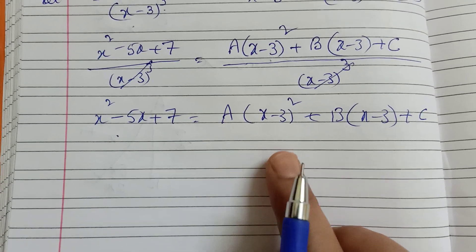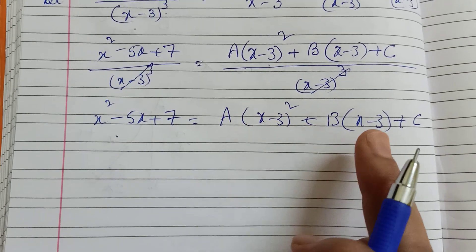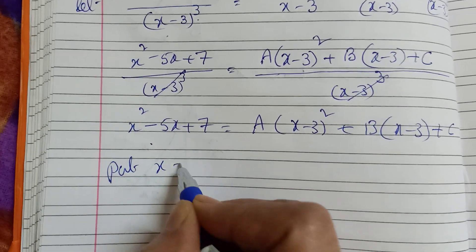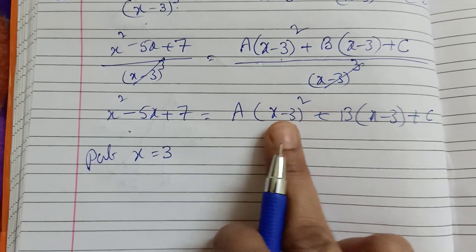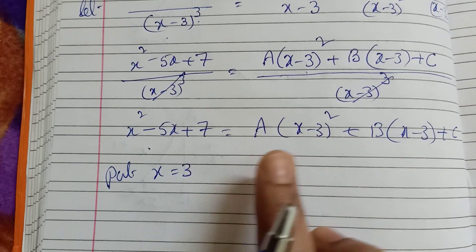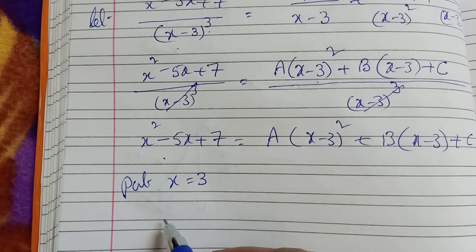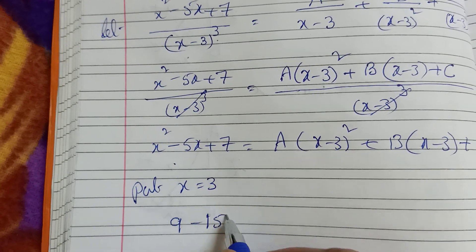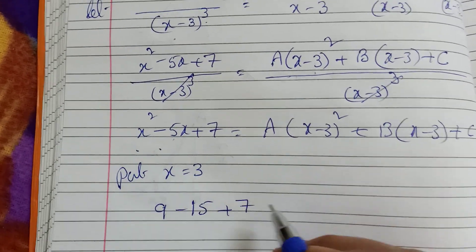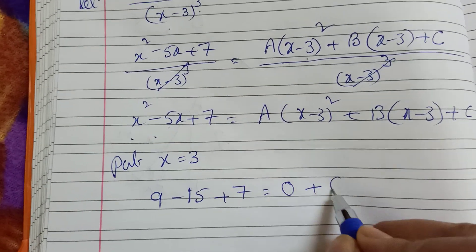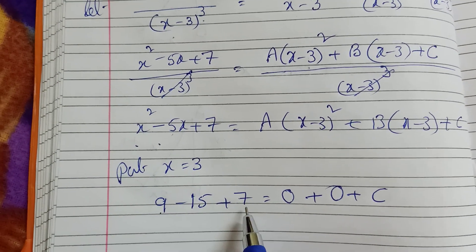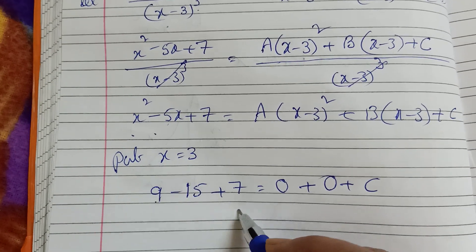Let x equal to 3. Then: 3 squared is 9, minus 5 times 3 is 15, plus 7. So 9 minus 15 plus 7 equals 1. The terms with A and B become 0 since (x minus 3) equals 0. Therefore C equals 1.